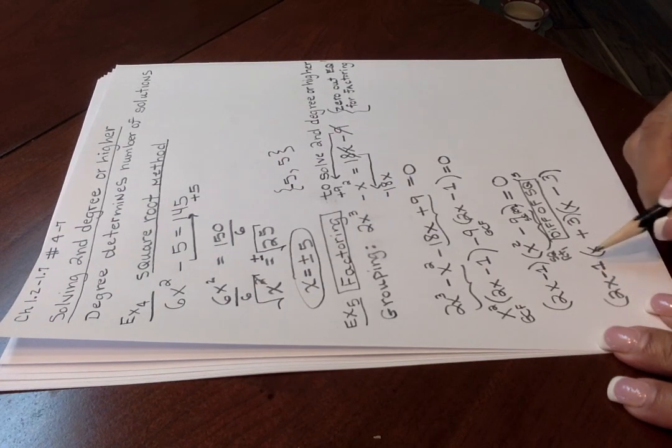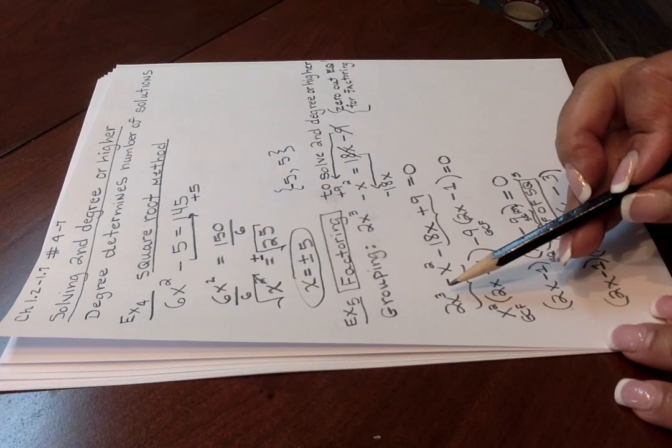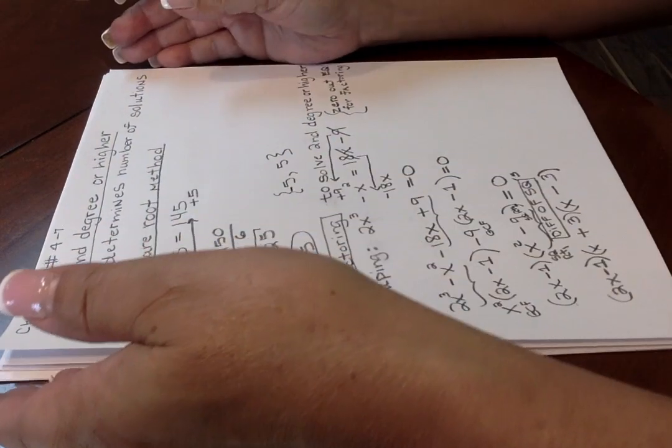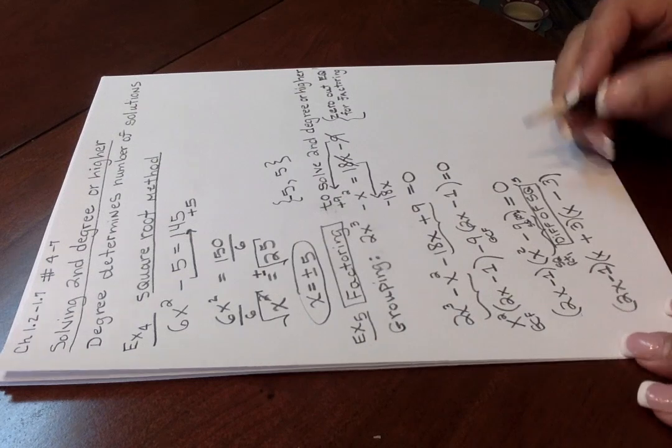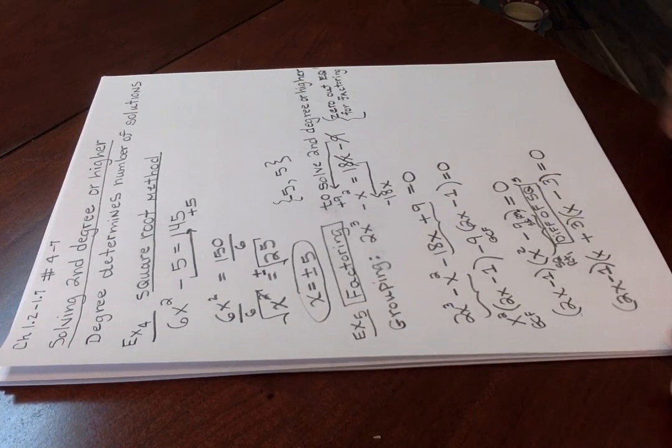Again, let's go back to reviewing that. Whatever the degree is, highest degree, that's how many solutions you should have. So for this particular problem, we're going to have three solutions. Don't forget to drop down the equal sign and the zero.